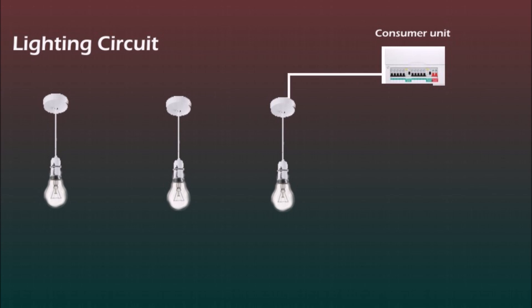The cable from consumer unit runs to the first lamp ceiling rose, then from the first lamp to the second one and from the second to the third. As the circuit is radial, it finishes at the third lamp.